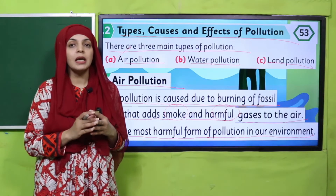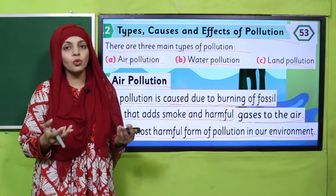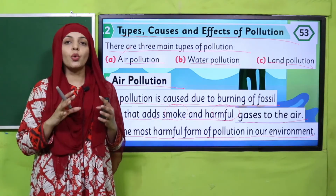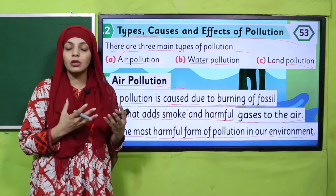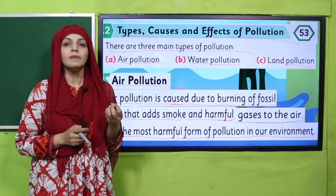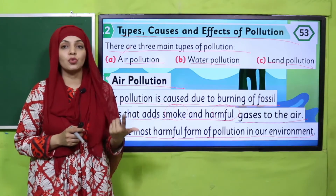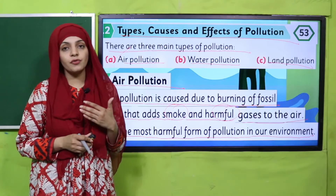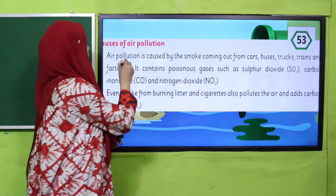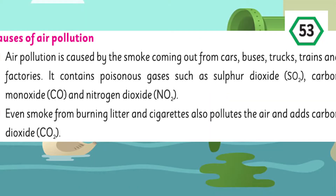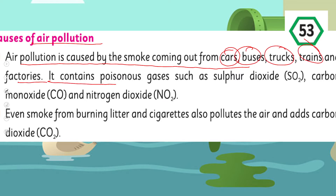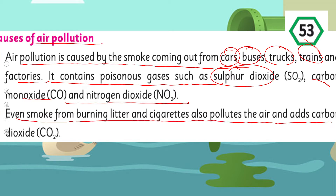Air pollution is mainly caused by the burning of fossil fuels — the fuel in your car, the gas burned in homes, and coal used in industry. Their burning releases smoke that causes pollution, and this is the most dangerous form of pollution. 'Causes of Air Pollution: Air pollution is caused by the smoke coming out of cars, buses, trucks, trains, and factories. It contains poisonous gases such as sulfur dioxide, carbon monoxide, and nitrogen dioxide. Even smoke from burning litter and cigarettes also pollutes the air and adds carbon dioxide.'